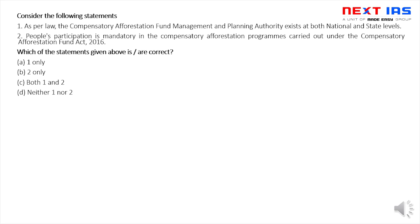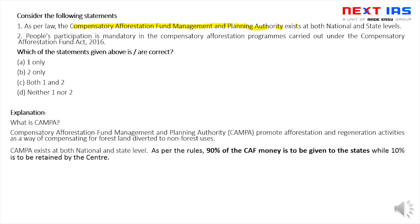अगले question में CAMPA की बात है — Compensatory Afforestation Fund Management and Planning Authority। यह basically 2001 में Supreme Court के dictate के बाद शुरू हुई। इसका purpose: जब कोई development/industrial activity होती है और forest land divert किया जाता है, तो उसे compensate करना — afforestation और regeneration activities से। इसे 2016 में statutory backing मिली। यह two-tier mechanism है — central level पे और state level पे। States को 90% fund allot किए जाते हैं।